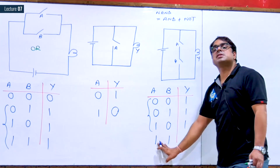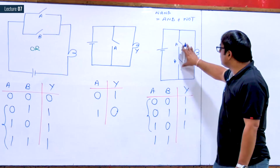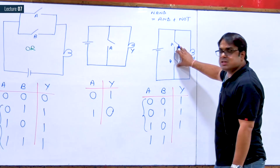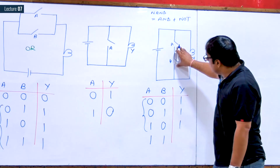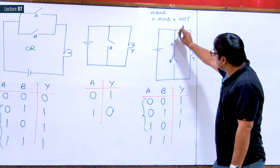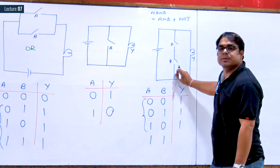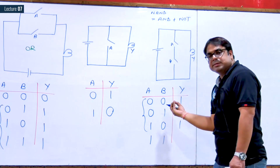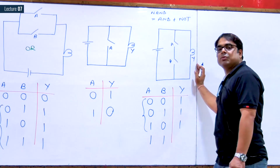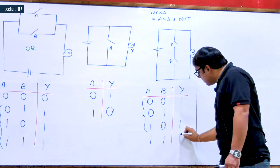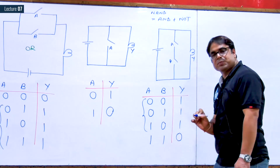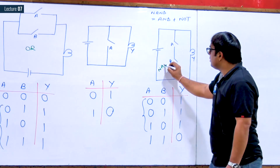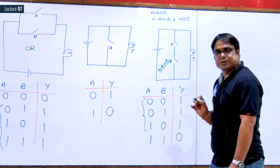When both switches are ON, it creates a short-circuit path that attracts all the current, so no current goes to the bulb and the bulb is not glowing — output is logic low. As expected, this confirms the logic of a NAND gate.